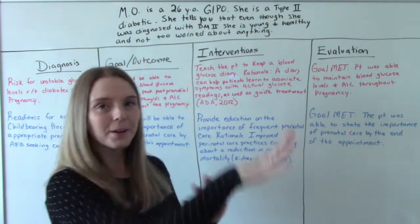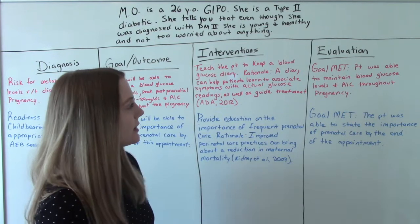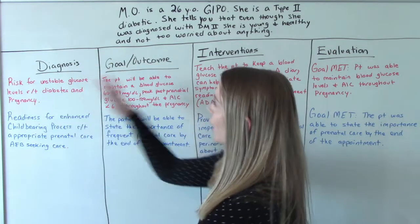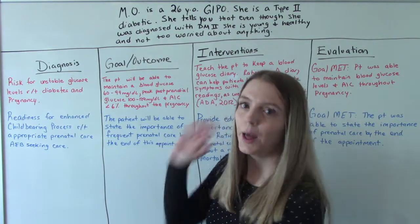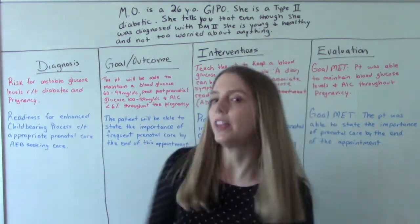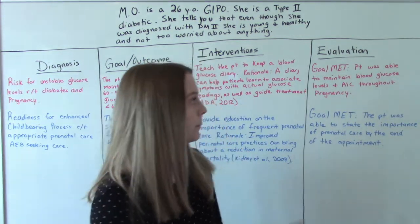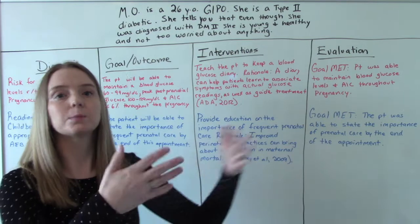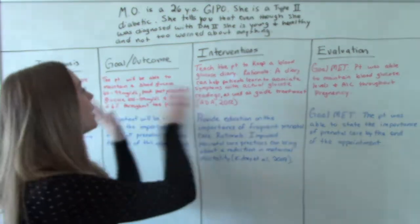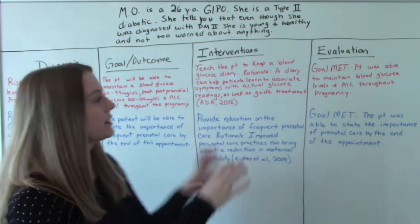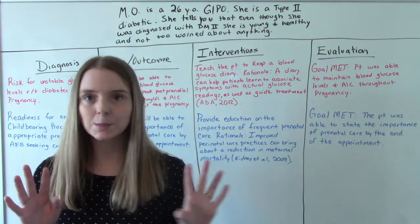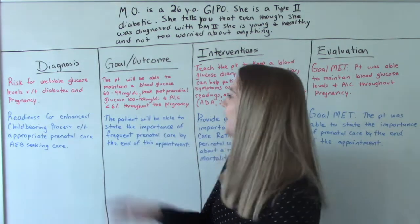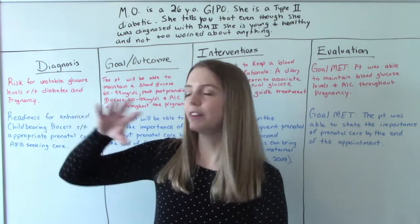We can say at the end that our goal was met and they were able to maintain blood glucose levels and A1C throughout the pregnancy. This goal spans the whole nine months, so what we could do is set this goal and then for every follow-up appointment, check their blood sugar, go over their diary, and say yes, they've met that goal at this point so far — but we're not going to discontinue it. We're going to keep this one because it's not complete until the end of the pregnancy, until delivery. So for these longer-term goals, we're going to be checking in between at every visit.